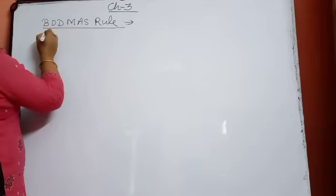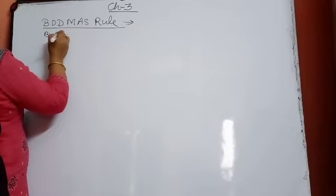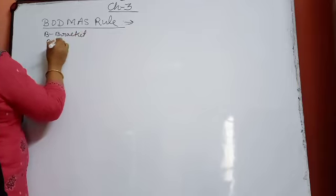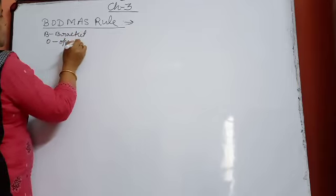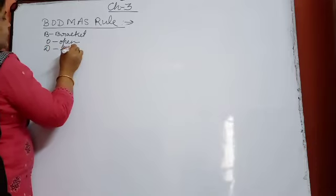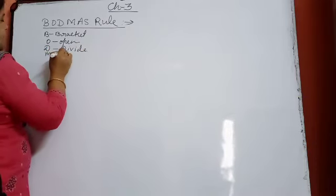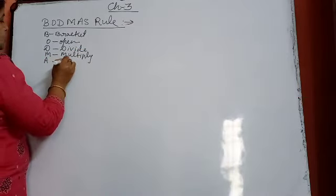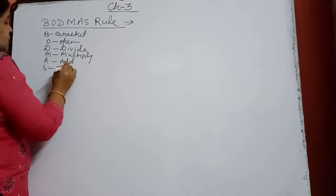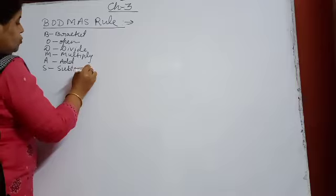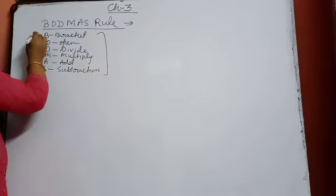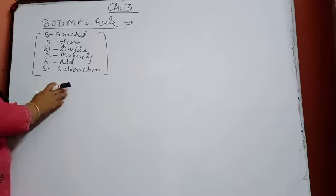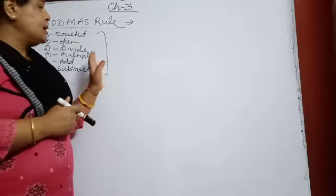I am writing its expanded form: B for bracket opening, O for 'of', D for divide first, M for multiply, A for addition, S for subtraction. In this way we have to perform the fundamental operations of arithmetic. This is its expanded form.